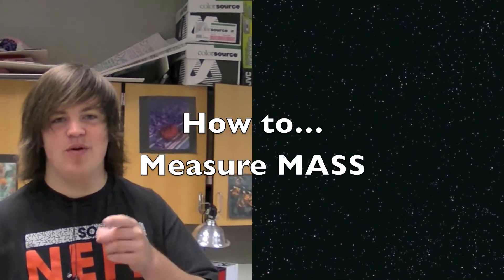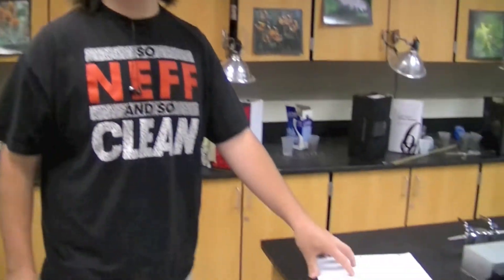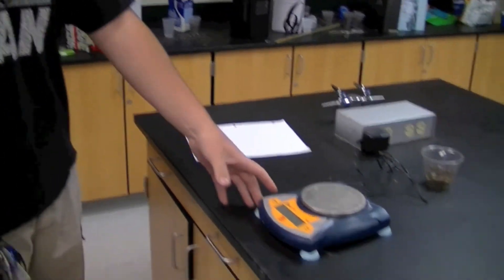This is how to measure and record mass. To do this, we're going to need two things: a weighing paper and a paper to record your data. Also, you're going to need a scale.